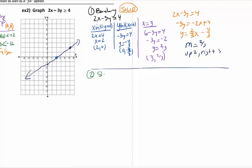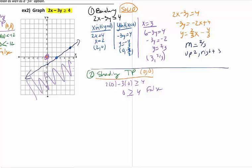So now I need to figure out my shading, which I'm going to use a test point. If you can use the origin, we're going to use that. So I'm going to plug it into the original problem. 2 times 0 minus 3 times 0 is greater than or equal to 4. So I get 0 is greater than or equal to 4. Is 0 greater than or equal to 4? Your answer there should be no. It's false. If it had been true, I would have shaded above. But it's not true. So I want to shade the opposite side of that point.